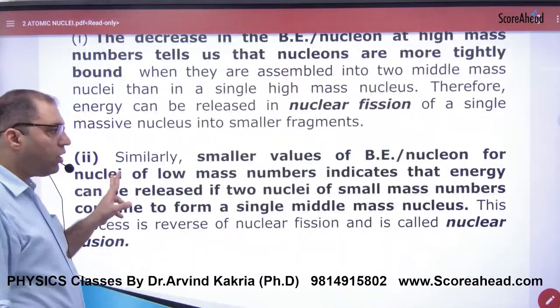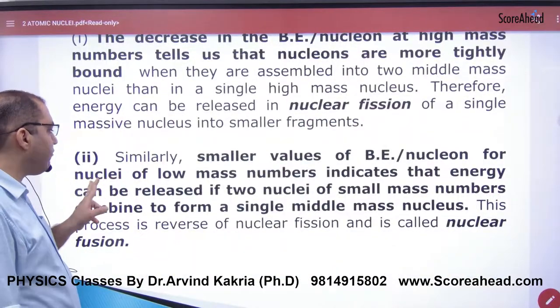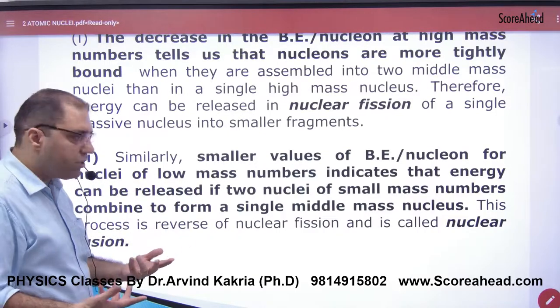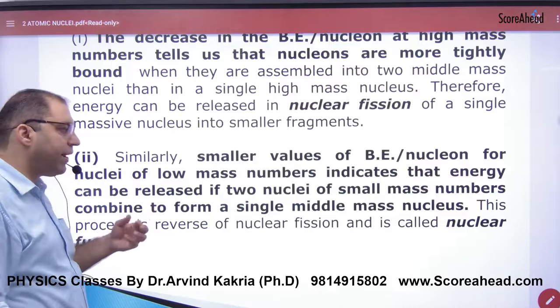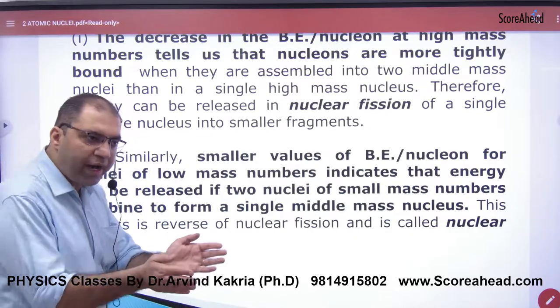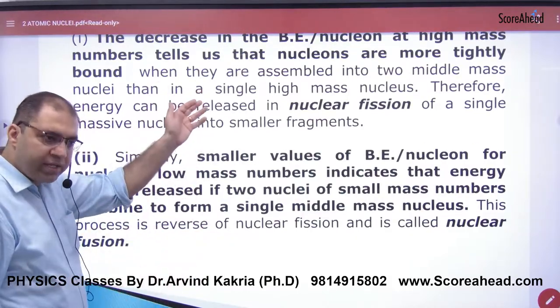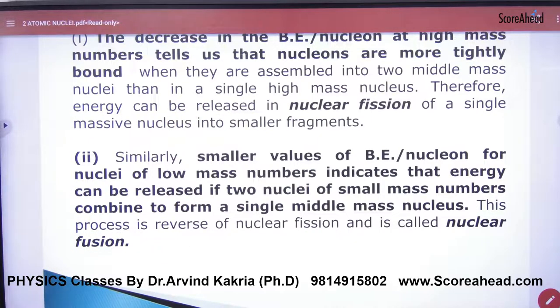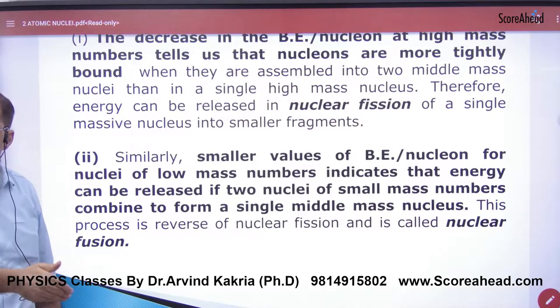Similarly, smaller values of binding energy per nucleon for nuclei of lower mass numbers indicates that energy can be released when nuclei of small mass numbers combine to form a middle mass nucleus. So elements like hydrogen can be combined, uranium can be broken. Fission and fusion will occur. You have to explain the phenomena of fission and fusion based on the binding energy per nucleon curve.